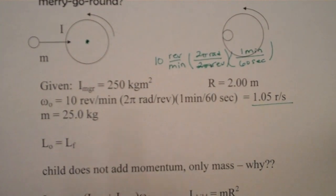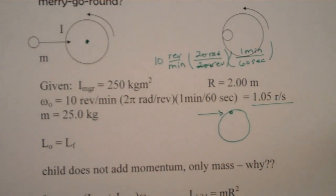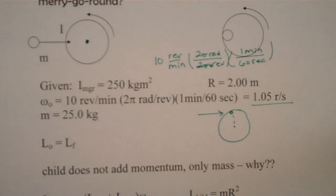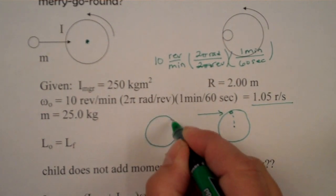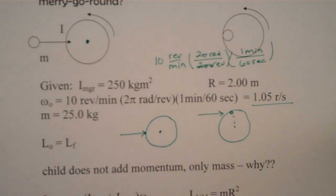In our last problem, where we had something jumping and landing on our circle at a distance from the pivot point, we had some initial angular momentum from the object. In this case, we don't. And the question is why? And if we look to see how the child is jumping on, they're jumping straight towards the center of mass and about the rotation point. So in this case, there's no lever arm.